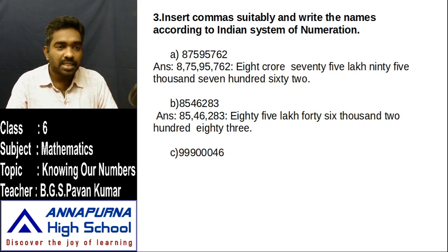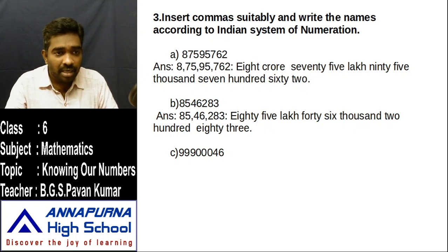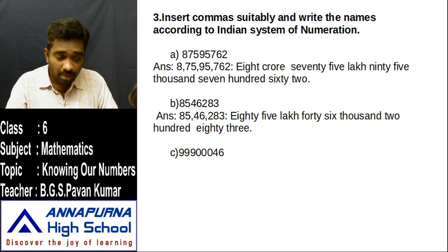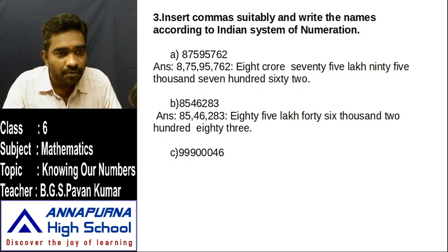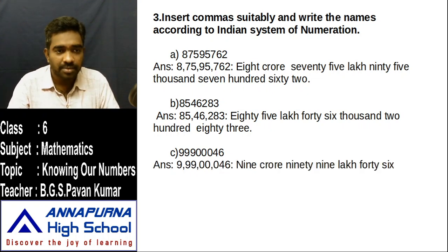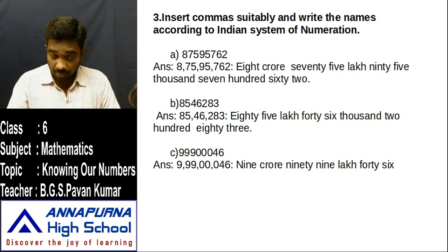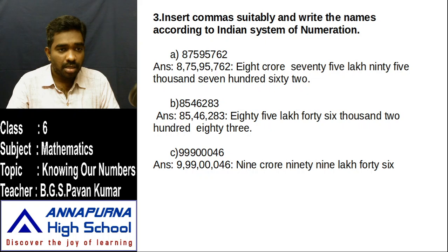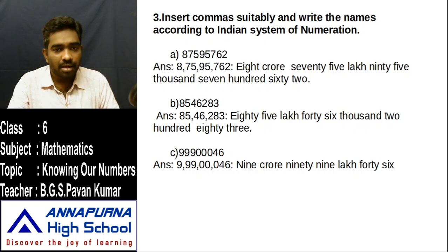Next one: 99900046. Insert commas — first comma after ones period, next after thousands period, next after lakhs period. The answer is 9,99,00,046 — nine crore ninety-nine lakh forty-six.